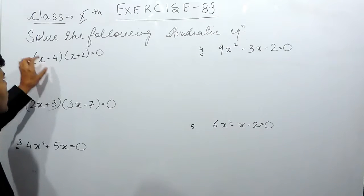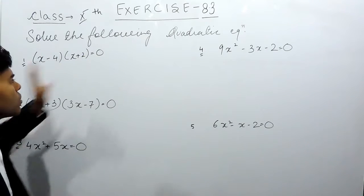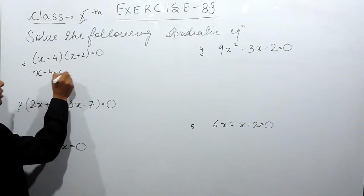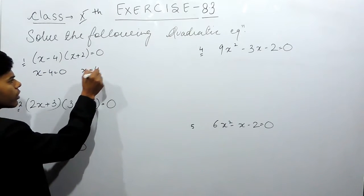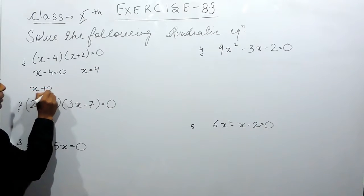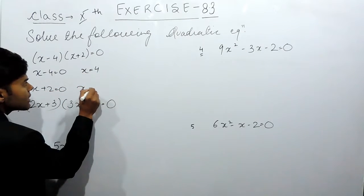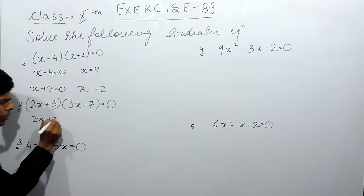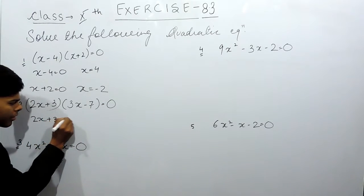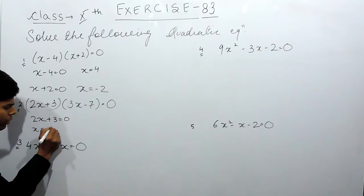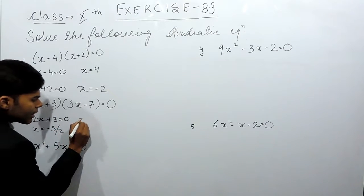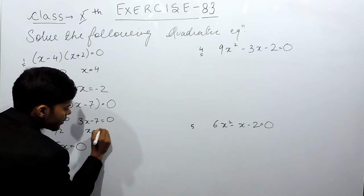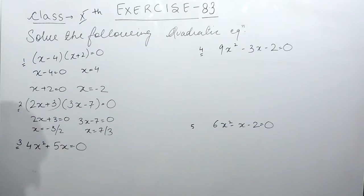We just have to put the value of x equals to 0. That means x minus 4 equals to 0, so x equals to 4, and x plus 2 equals to 0, that means x equals to minus 2. Similarly, 2x plus 3 equals to 0, x equals to minus 3 by 2, and 3x minus 7 equals to 0, x equals to 7 by 3.